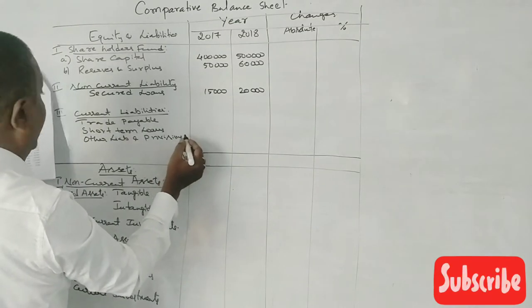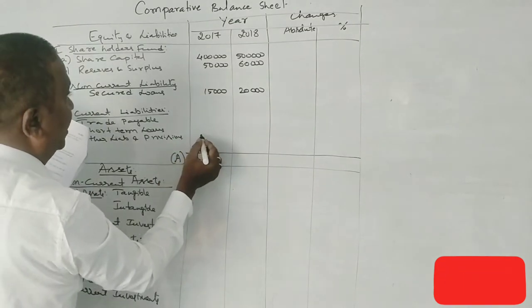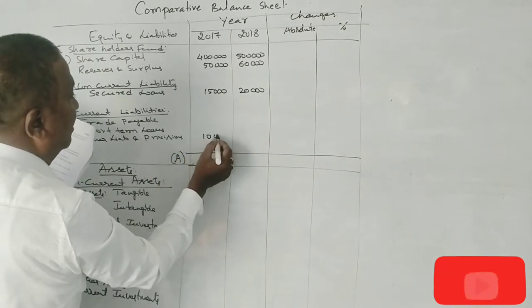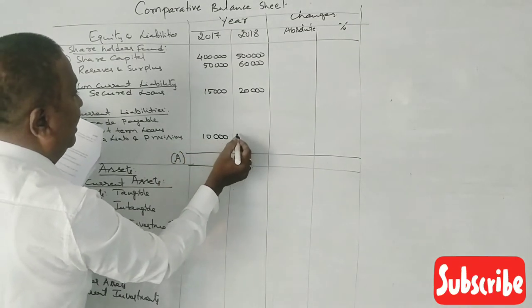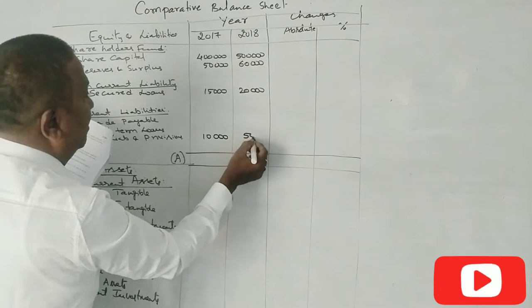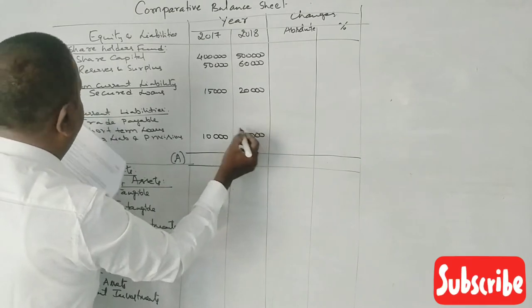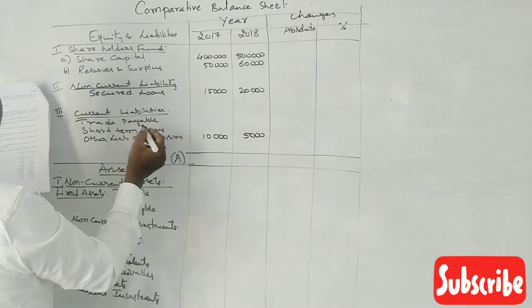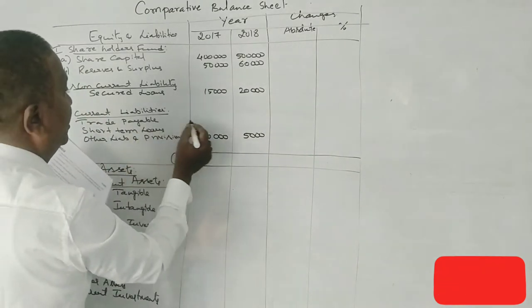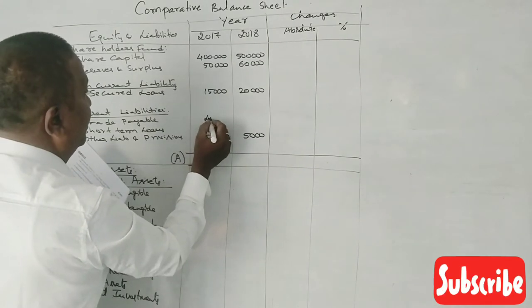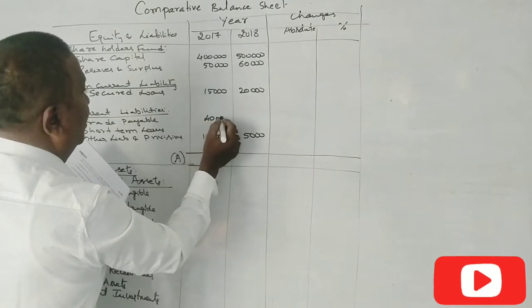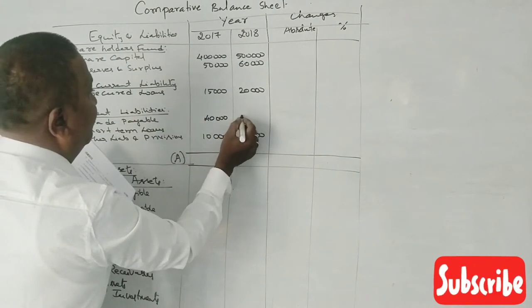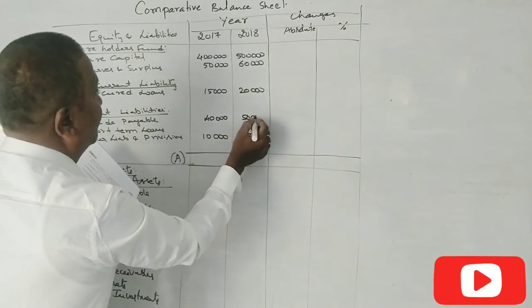Other current liabilities and provisions: 10,000 in 2017 and 5,000 in 2018. Trade payables: 40,000 in 2017 and 50,000 in 2018.